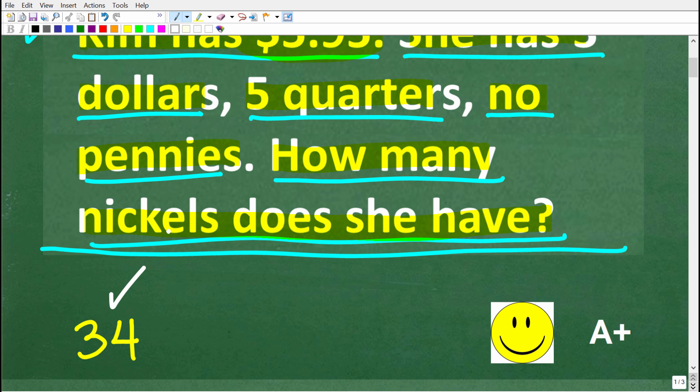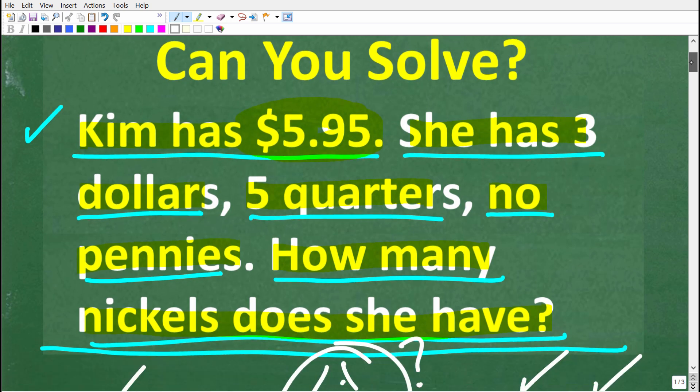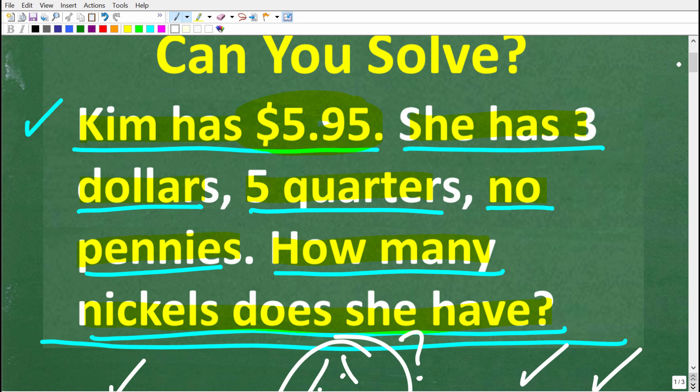The correct solution here is 34 nickels. Now, if you got this right, you definitely get a happy face and an A+. And if you're like, Mr. U2 Math, what's going on? Well, this is not that difficult. Of course, we need to understand how to work with dollars and cents. And if you're a bit confused here about U.S. currency, let me just do a quick review here.